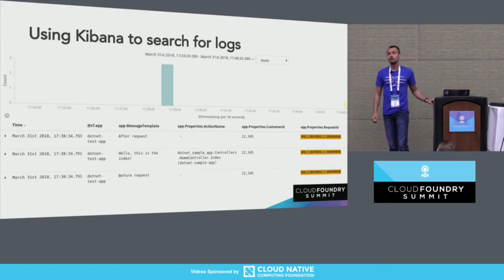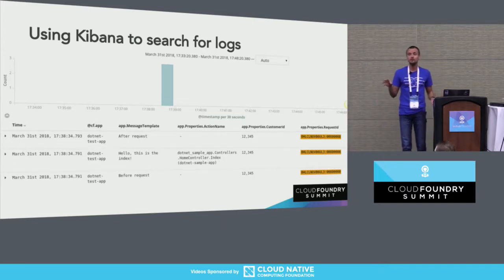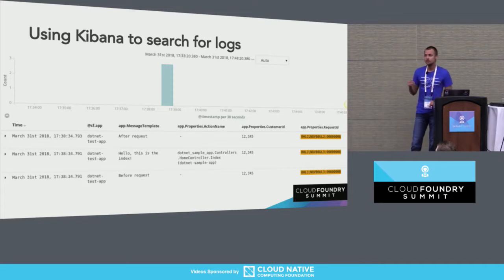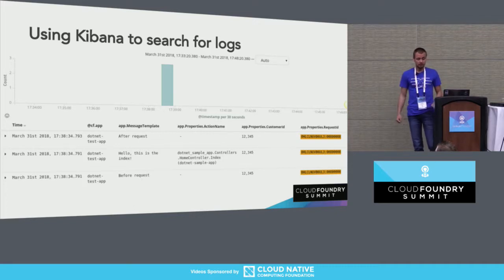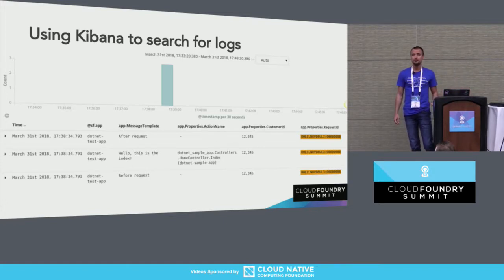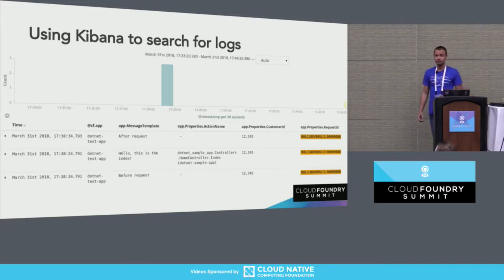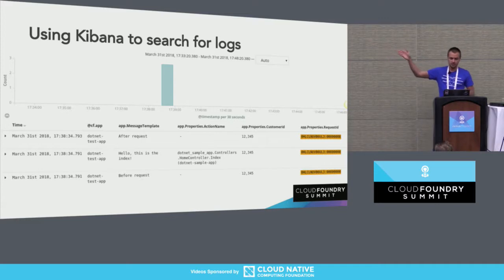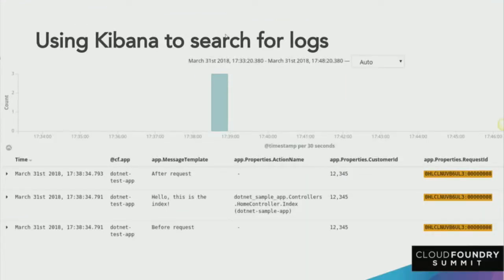At this point our logging is configured for our simple application, printing to standard output, and Cloud Foundry is responsible for collecting those messages. Now we need to talk about how to utilize this and filter and search our messages. In my presentation I'm showing screenshots from an application called Kibana, using the popular ELK stack — Elasticsearch, Logstash, Kibana — which is commonly used with Cloud Foundry. This stack takes messages from Cloud Foundry, stores them, and Kibana provides a way to view your log messages. You can see three messages here, two from our custom middleware, with our custom field and request ID attached to all of them.